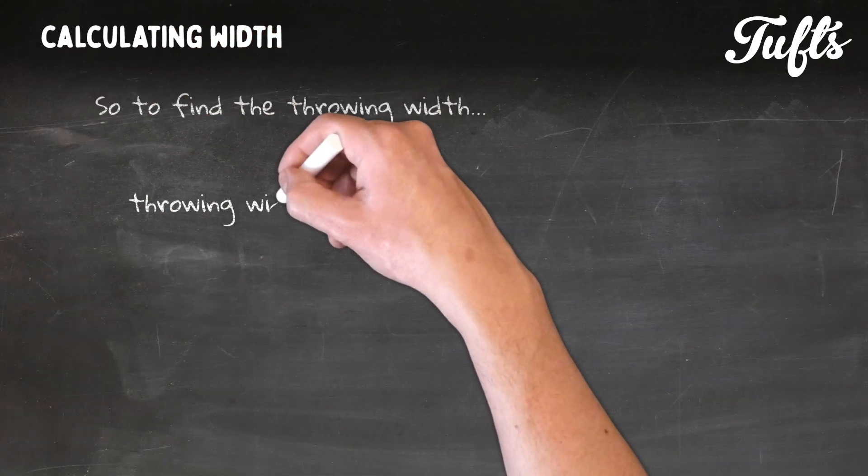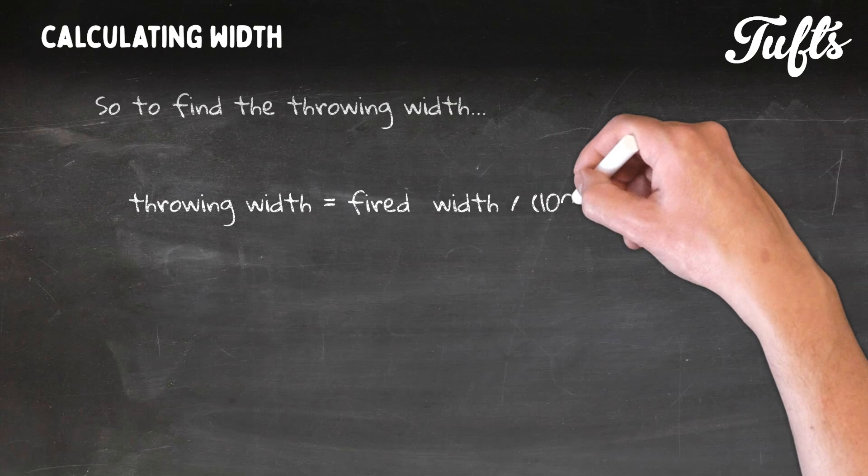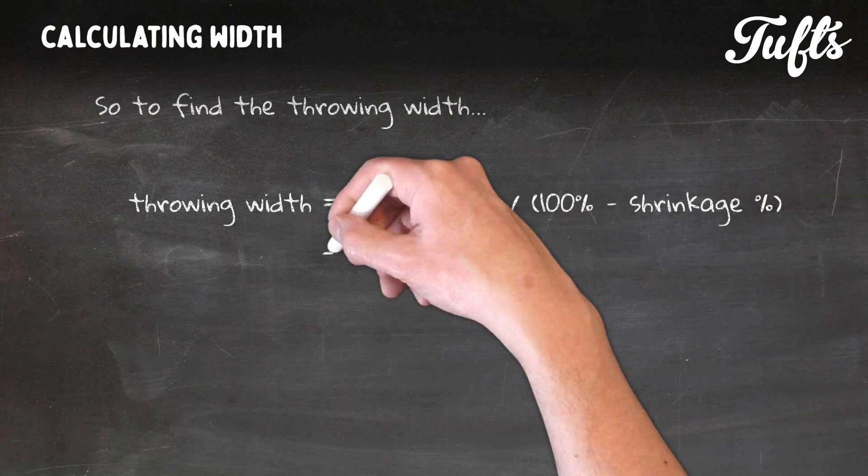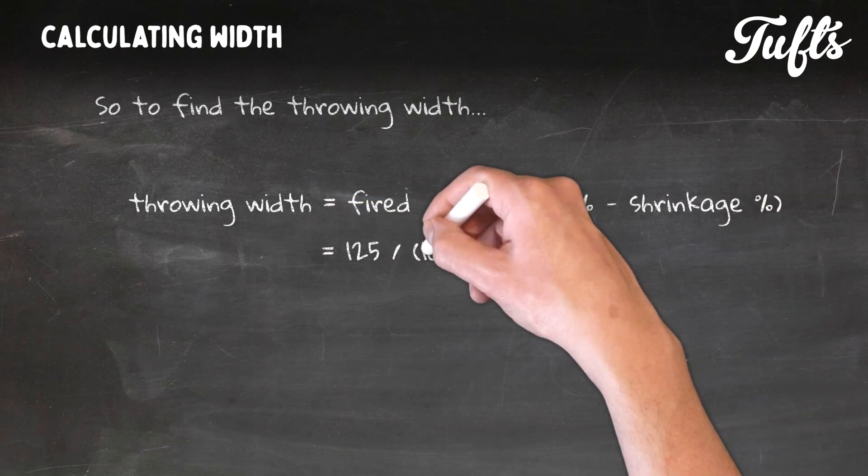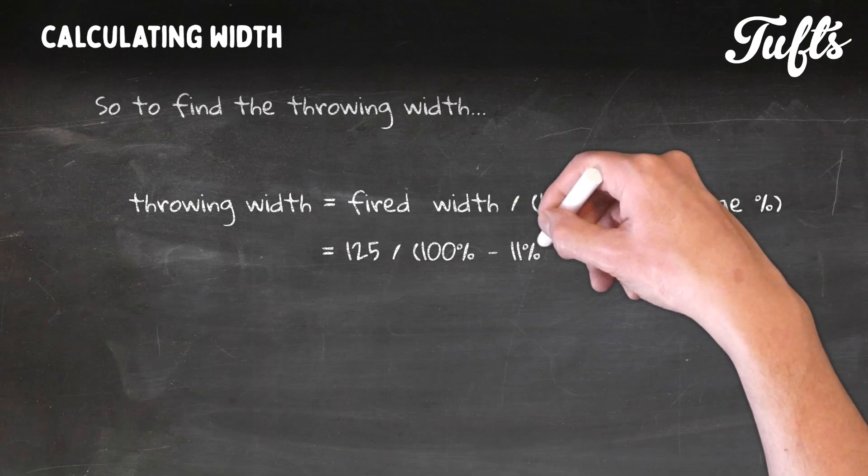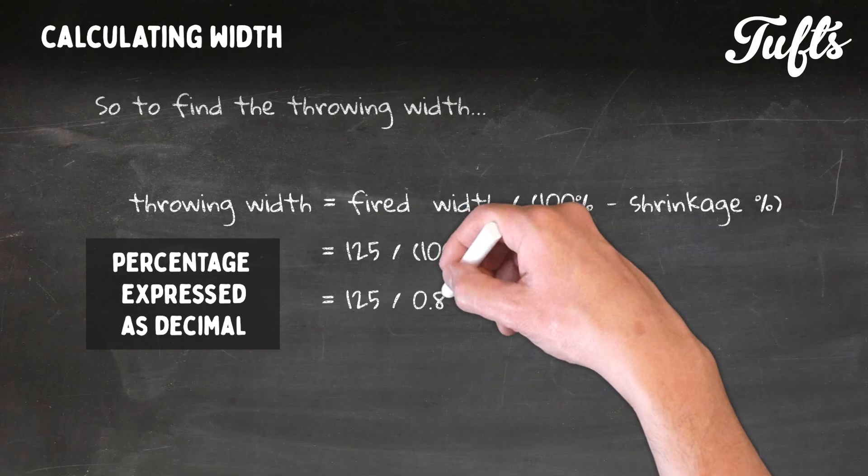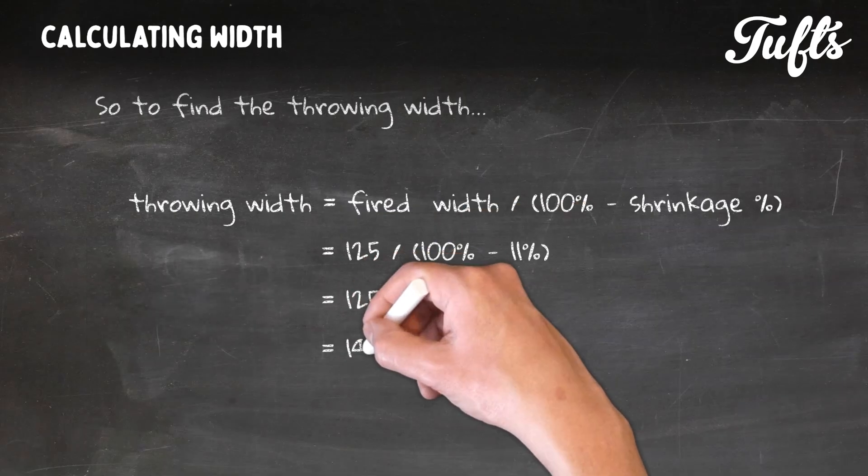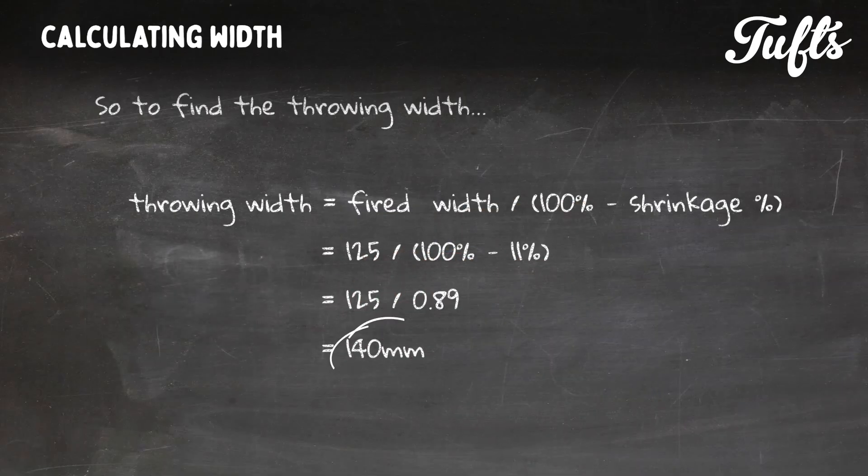I take the fired width and I divide it by 100 minus the shrinkage rate. So that's 125mm divided by 100% minus 11% shrinkage, or 125 divided by 0.89. So the throwing width is 140mm.